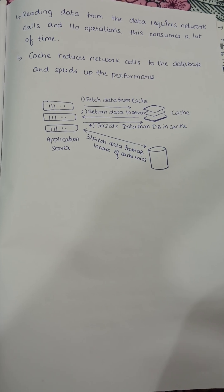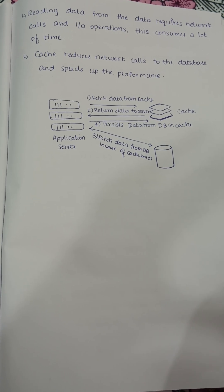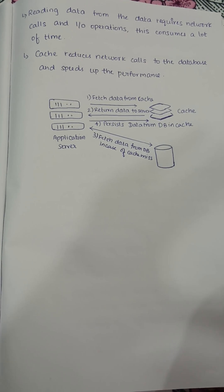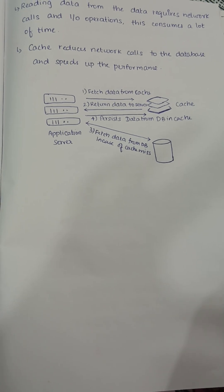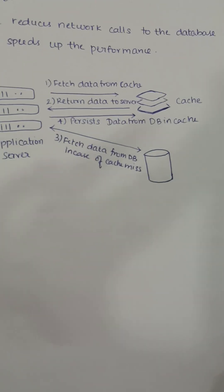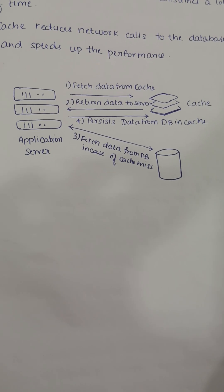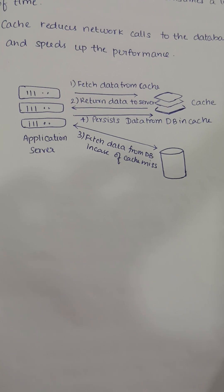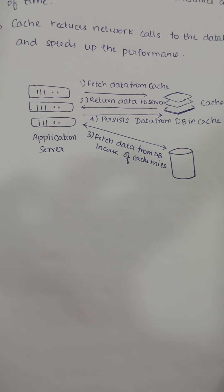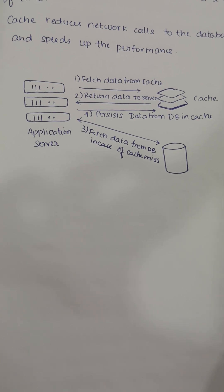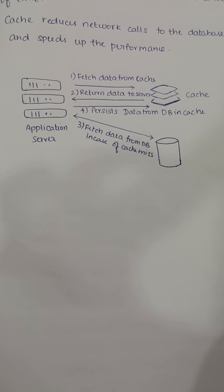Reading data from the database requires network calls and I/O operations, which consumes a lot of time. Cache reduces the network calls to the database and speeds up performance. Looking at the diagram: the application server fetches data from the cache and returns it. In case of a cache miss, it fetches from the DB and persists the data back into the cache.